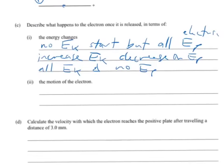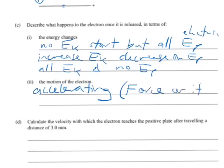Two, the motion of the electron. Describe what happens to the electron once it's released in terms of the motion of the electron. Well, we can say that it's accelerating. We know it's accelerating because there's a force acting on it. From the force due to the electric field, you put a charge into an electric field. The charge interacts with the electric field, experiencing a force from it.